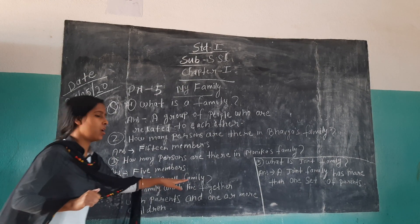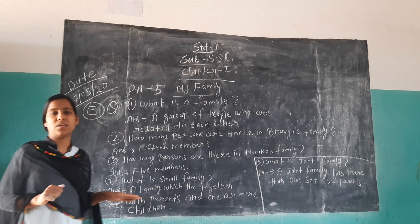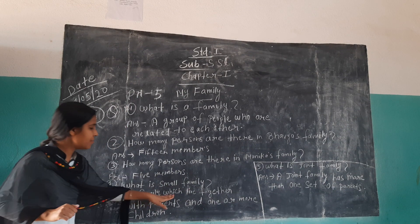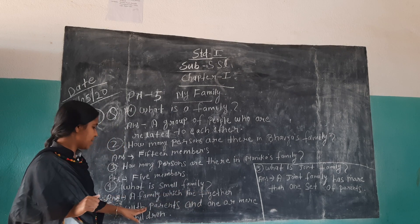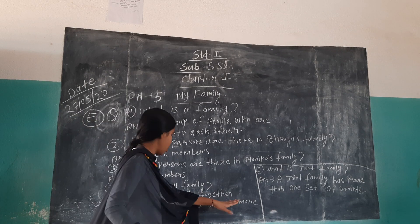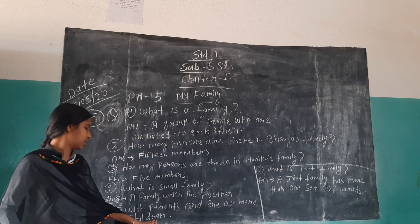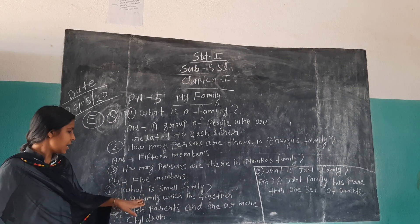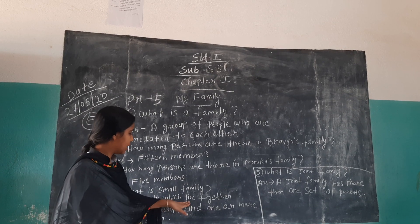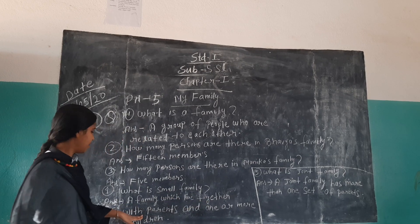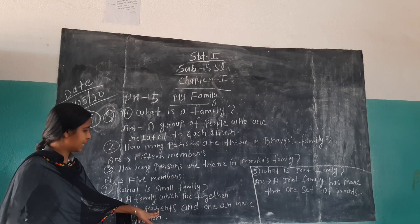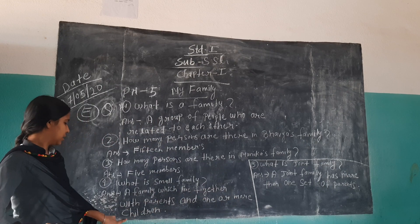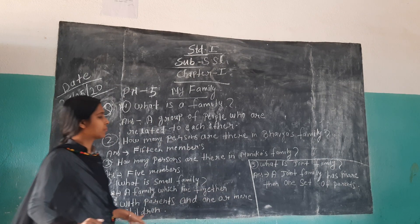Number 4: What is a small family? You know, a small family is always a happy family. A family which lives together with parents and one or more children is a small family.